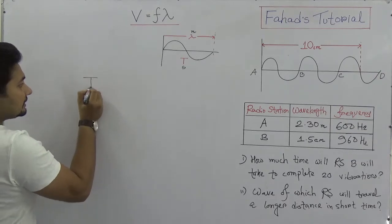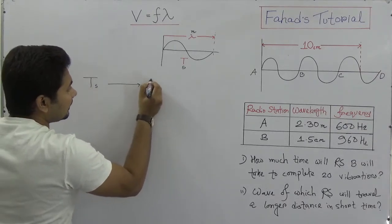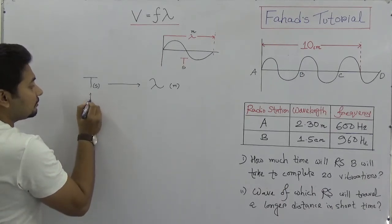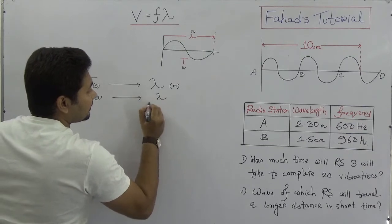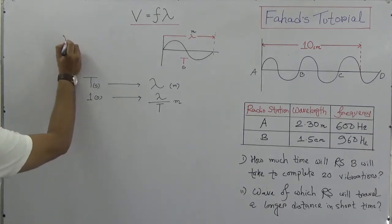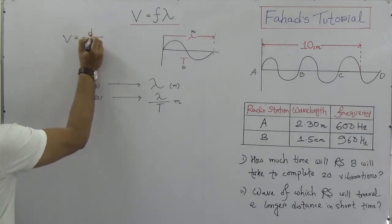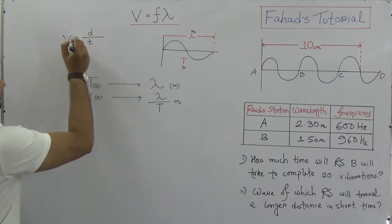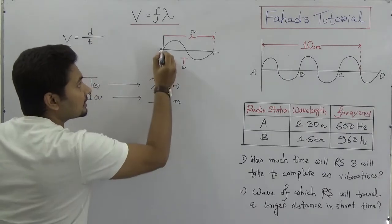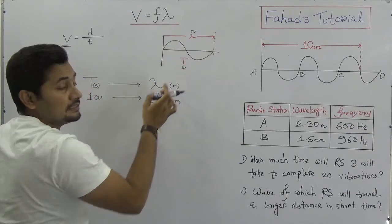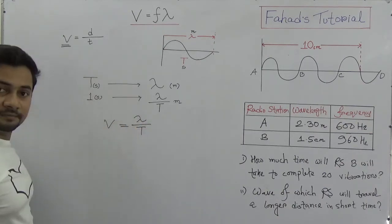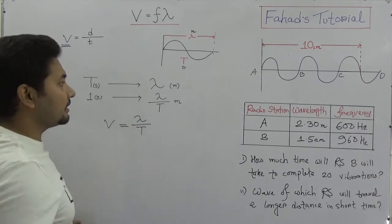If in T seconds the wave travels lambda meters, then in one second it travels lambda divided by T. The definition of velocity is distance divided by time. So if lambda is the distance for one complete vibration and T is the time required, then we can say that V equals lambda divided by T.